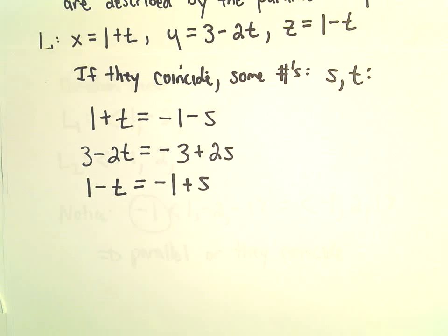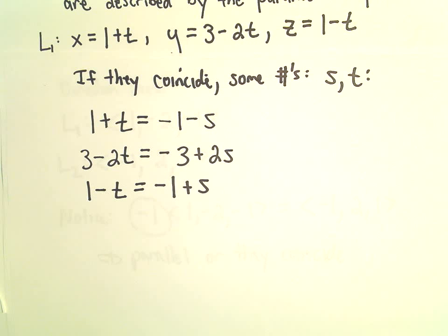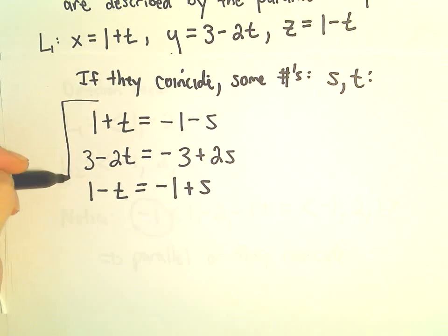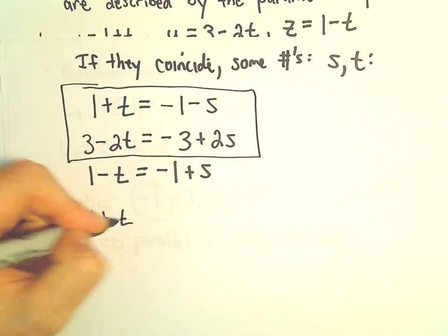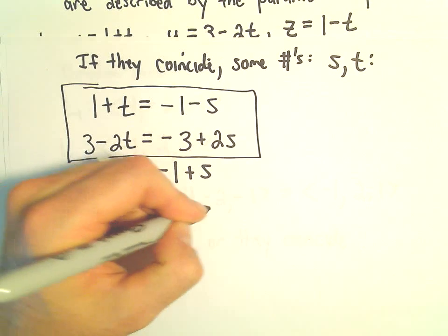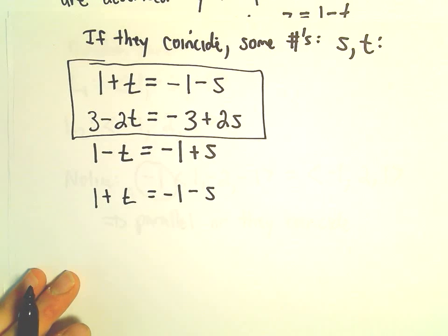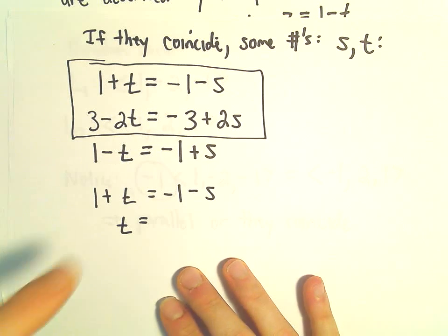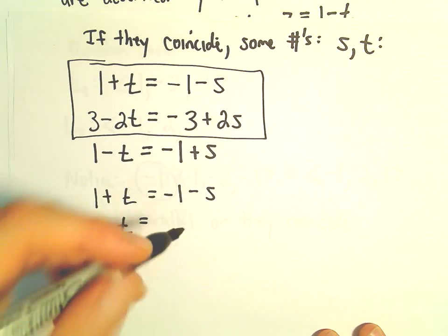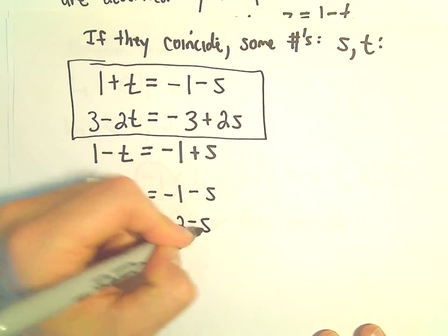So we'll set the parametric equations there equal. So now we have a little system of equations, and we're just trying to determine if there's a solution or not. So I'm going to play with the first two equations here for a moment. We have 1 plus t equals negative 1 minus s. I'm going to solve this for t. So we can solve for t by subtracting 1. That will give us t equals negative 2 minus s.